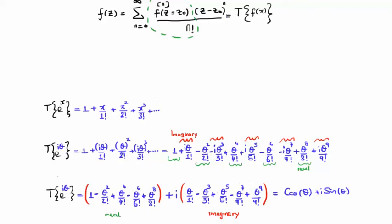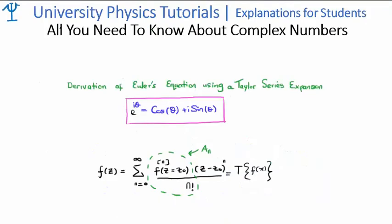Ergo, or therefore, the Euler equation is correct. So we have just shown that one of the most important expressions using complex numbers is true. That the Euler equation is true. And e to the iθ is cosine θ plus iota times the sine of θ.